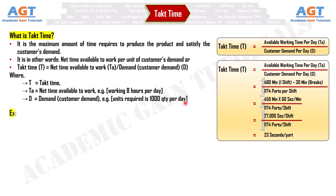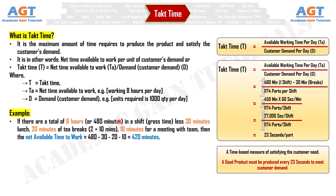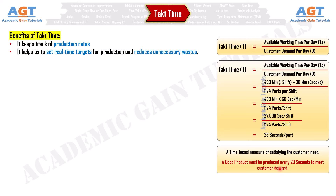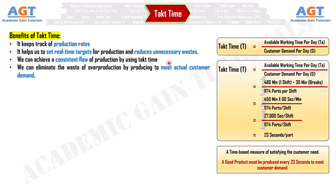Example: If there are 8 hours (480 minutes) in a shift, less 30 minutes lunch, 20 minutes of tea breaks, and 10 minutes for a team meeting, then the net available time equals 480 − 30 − 20 − 10 = 420 minutes. If customer demand is 840 units per day and one shift is being run, the line must output at a minimum rate of 2 parts per minute to satisfy customer demand. Benefits: Takt Time keeps track of production rates, helps set real-time targets, achieves consistent production flow, and eliminates overproduction waste.